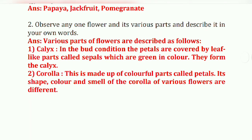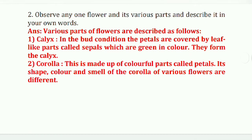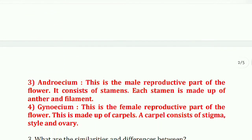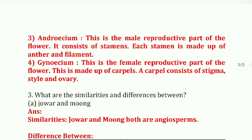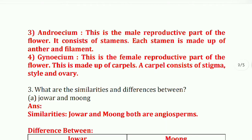Next, corolla — this is made up of colorful parts called petals. The shape, color, and smell of the corolla of various flowers are different. Third part, androecium — this is the male reproductive part of the flower and it consists of stamens. Each stamen is made up of anther and filament.